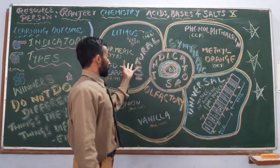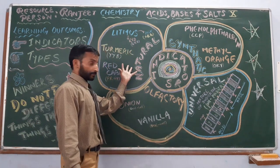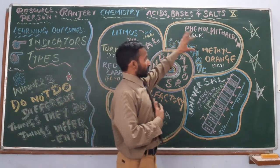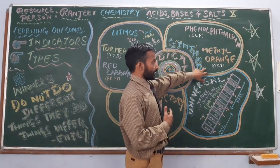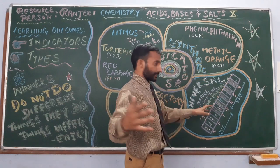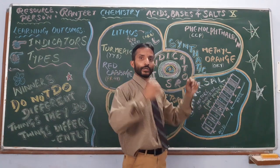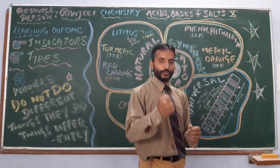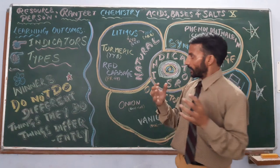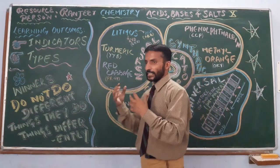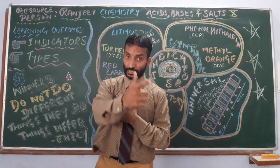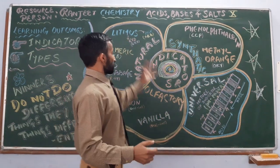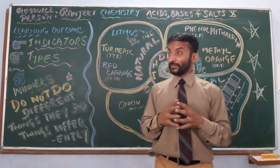Indicators are substances which indicate the nature of the solution of the salt or substance by changing its colour. We are having four different types of indicators: natural indicators, olfactory indicators, synthetic indicators, and universal indicators. One by one we will discuss, theoretically as well as practically. Let us discuss first: natural indicators.